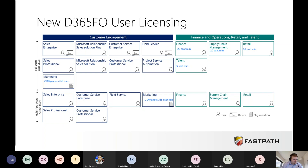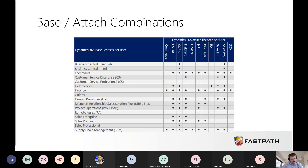In the Microsoft licensing guide, there's a chart showing what base and attach combinations are available — because not every license can be a base and not every license can be an attach. There are dependencies on which can be assigned where. For example, if you need a finance license, you can attach it to almost everything except the RA license. You can go across the chart to see what those combinations look like.